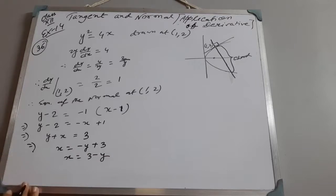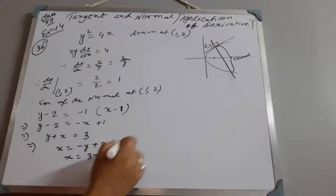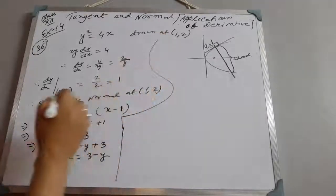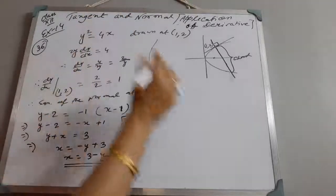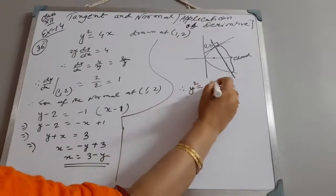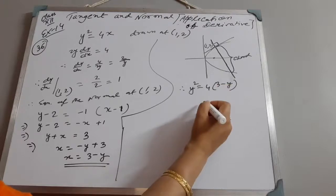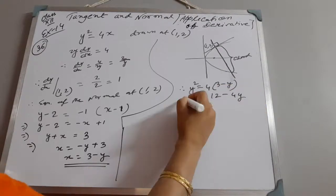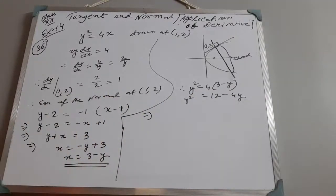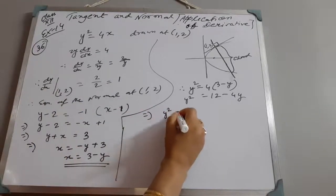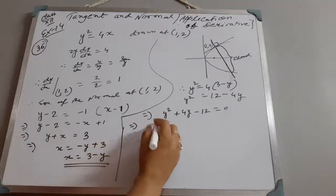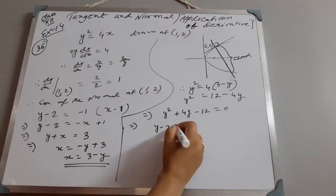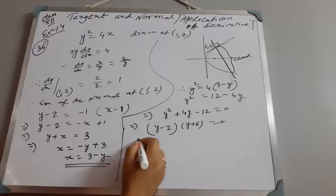Now substituting x = 3 − y into the parabola equation y² = 4x, we get y² = 4(3 − y) = 12 − 4y. This gives y² + 4y − 12 = 0. Factorizing: (y − 2)(y + 6) = 0, so y = 2 or y = −6.